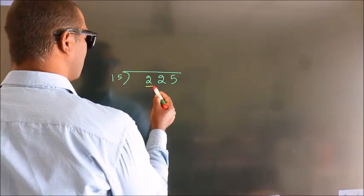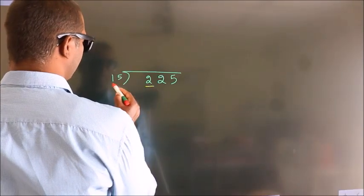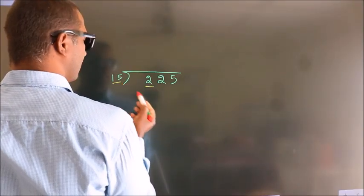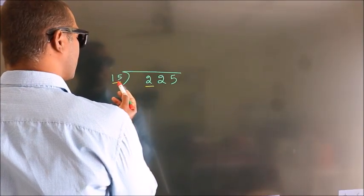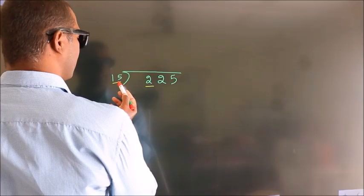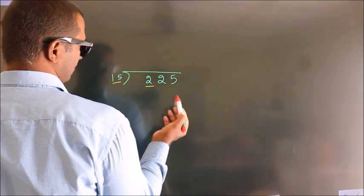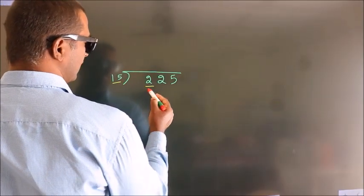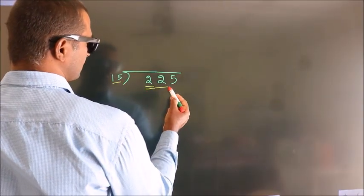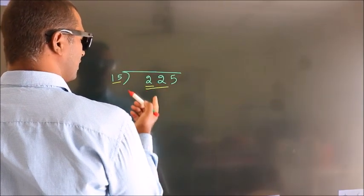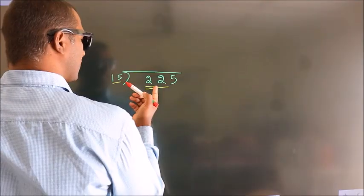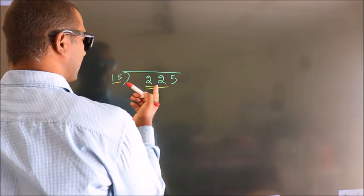Here we have 2, and here 15. 2 is smaller than 15, so we should take 2 numbers: 22. We need a number close to 22.